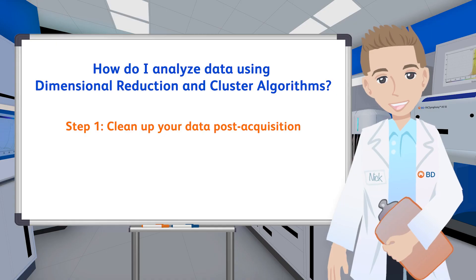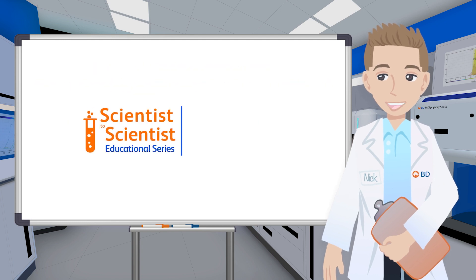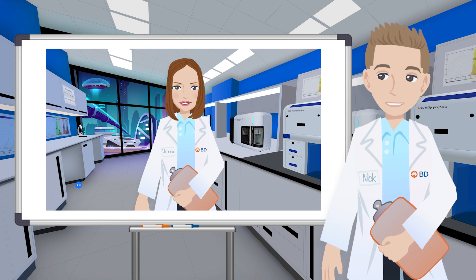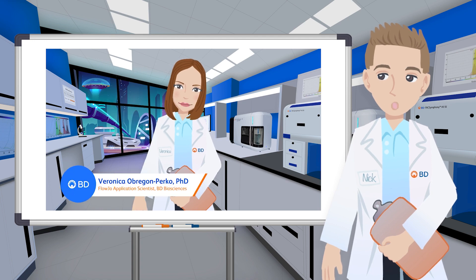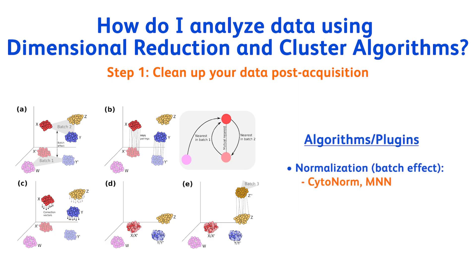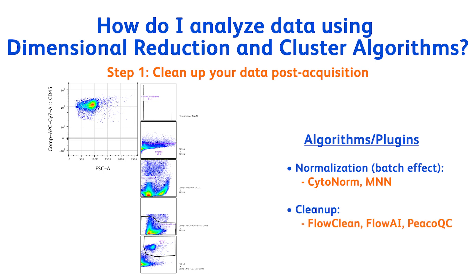The first step is to clean up your data post-acquisition. For more information on this crucial step, please refer to the cleaning up your data video in this series. This step will remove batch effects and all unwanted events from your sample — clogs, debris, dead cells. You could even select a specific cell type, for example CD45-positive cells, if your research is focusing on the local site.